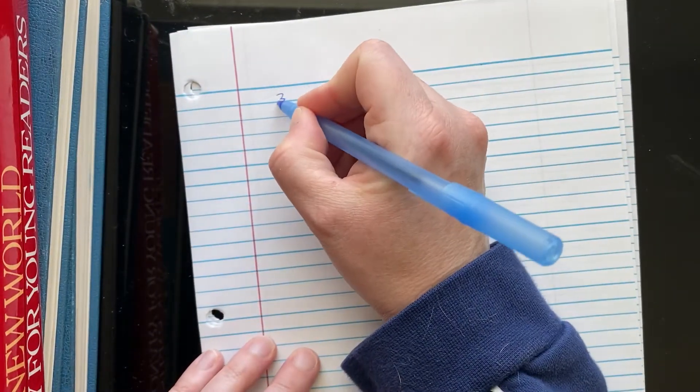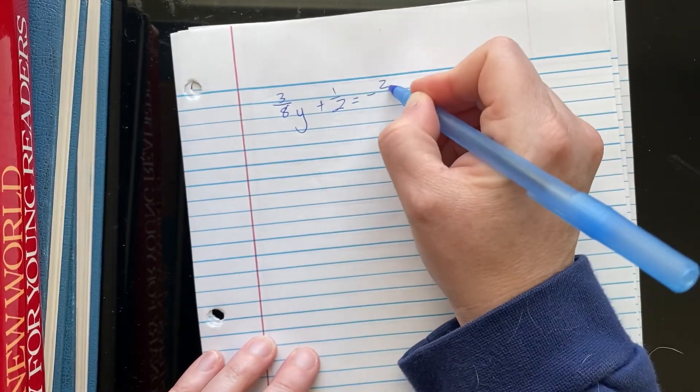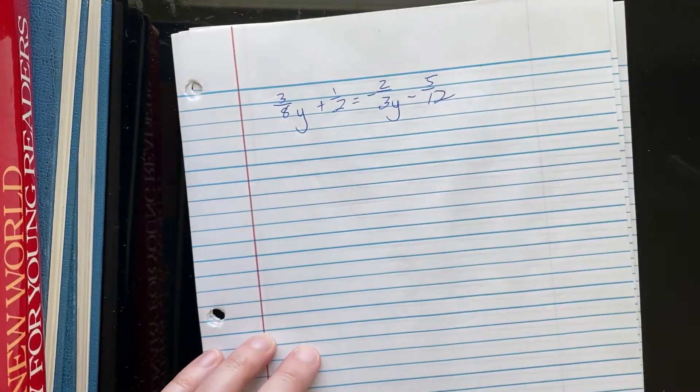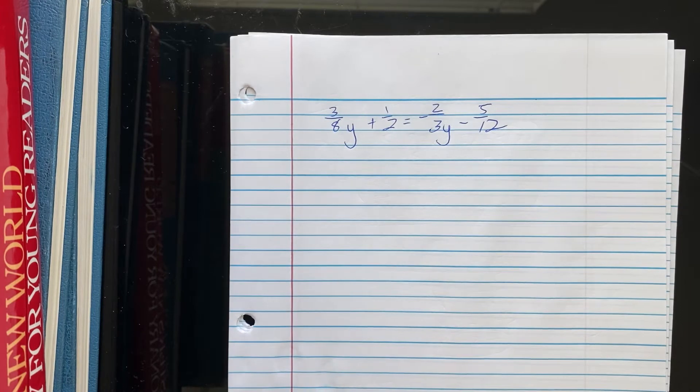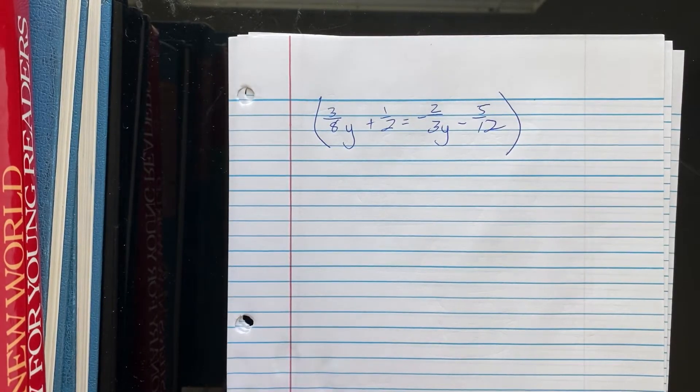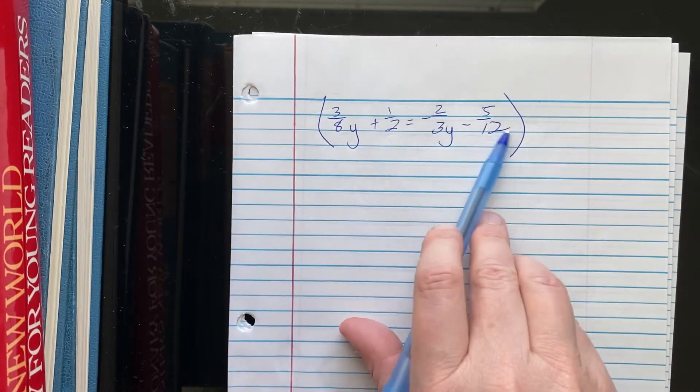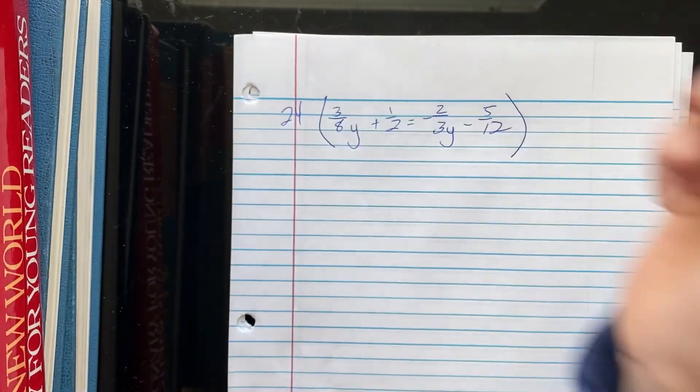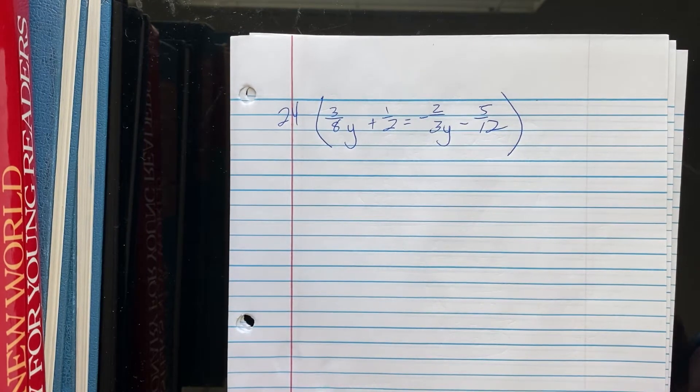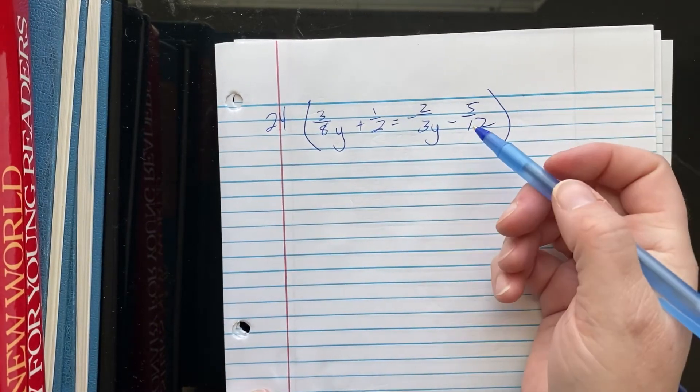Let me do another example with fractions because I know there are those of you out there who would avoid a fraction at all costs. 3 eighths Y plus 1 half equals negative 2 thirds Y minus 5 twelfths. Now, I could solve this. I could find that common denominator. I could work with it. But I want to pick a number that's going to cause all of these to become integers. So, you've got to kind of think about a common denominator here. If I picked 10, that wouldn't work. So, the number I'm actually going to pick here is 24.